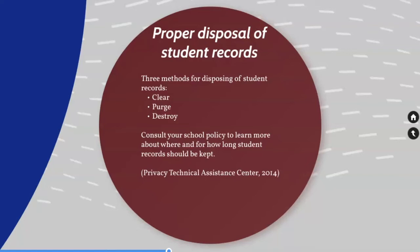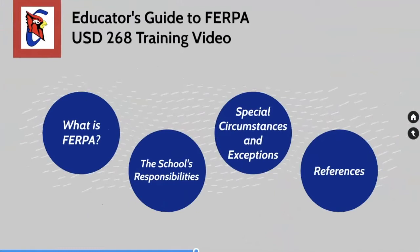Let's talk now about disposal of student records. There are three methods for clearing out or disposing of student records: clearing, purging, and destroying. It's important to consult your school policy before doing any of these methods, as schools will often specify where and for how long student records are to be kept electronically.